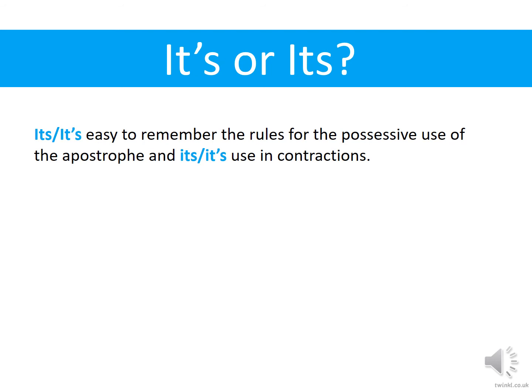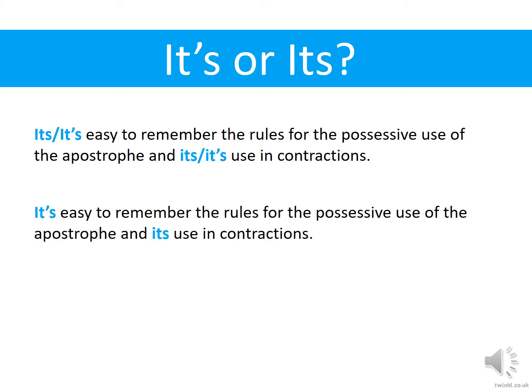'It's or its easy to remember the rules for the possessive use of the apostrophe and its use in contractions.' Which one do we think? 'It is easy to remember' — does that make sense? I think it might. And 'it is using contractions' or 'it has using contractions' — that doesn't make sense. So it's apostrophe first, then no apostrophe second: 'It's easy to remember the rules for the possessive use of the apostrophe and its use in contractions.'